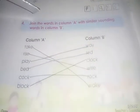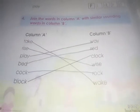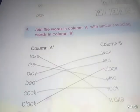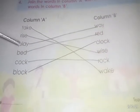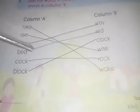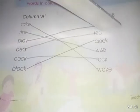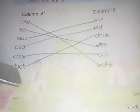Join the words in Column A with the similar sounding words in Column B. Take — rice. Rice — rice. Play — play. Bed — red. Red — opposite. Cock — c-o-c-k. Lock — l-o-c-k. Block — b-l-o-c-k.